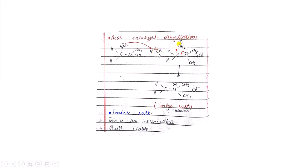We get an OH2-positive. In the next step, the lone pair on the nitrogen of the amino group attacks this carbon, and the electron density transfers toward the OH2, and as a result we have the amine salt. At this point the first step is completed — the formation of the amine salt. This amine salt is an intermediate; it is quite stable but also reactive.